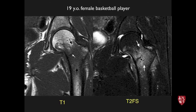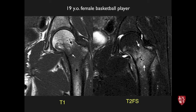Classic stress fracture in the proximal femur on the medial side: a lot of low signal on T1-weighted imaging, bright ill-defined edema on T2, and a partial fracture line. This is a high-risk fracture. If it isn't recognized and treated appropriately with non-weight-bearing or crutches, it could complete and require surgery.